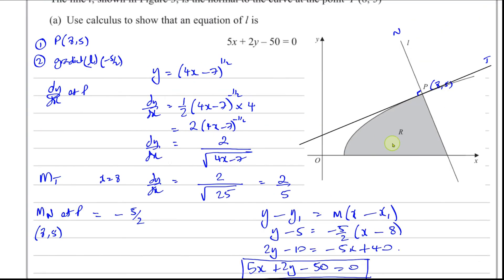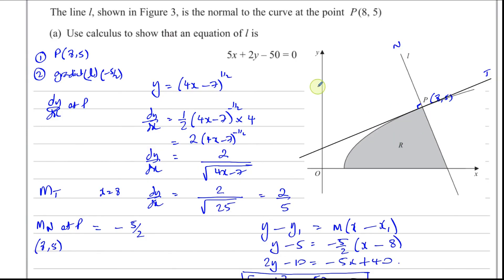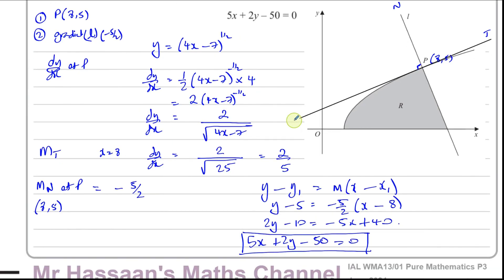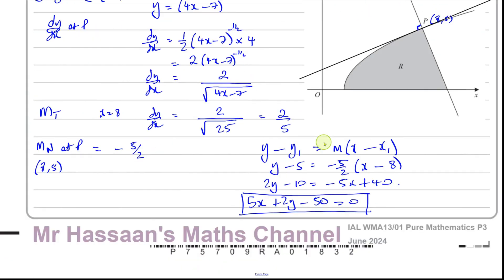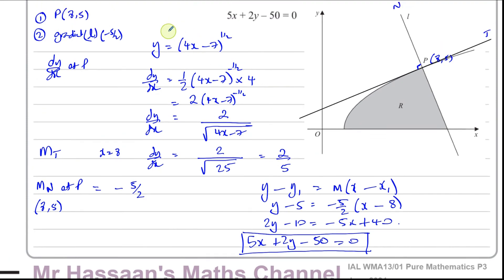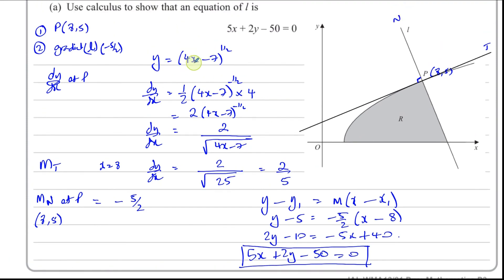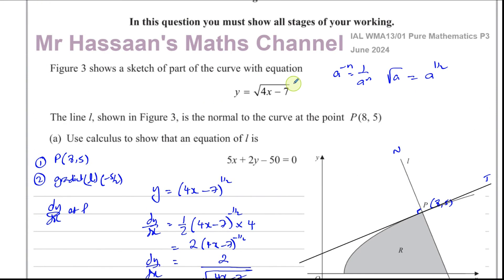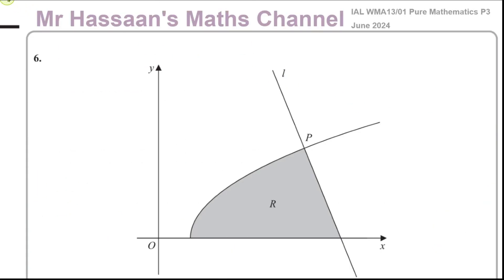Okay, pretty standard type of question, just using the chain rule to differentiate this 4x minus 7 to the power half. This is a difficult type of question that could appear in P2, in fact, and even P1, but the difference is the differentiation of this. It's something which is a P3 type of differentiation. So there's the answer to 6a.